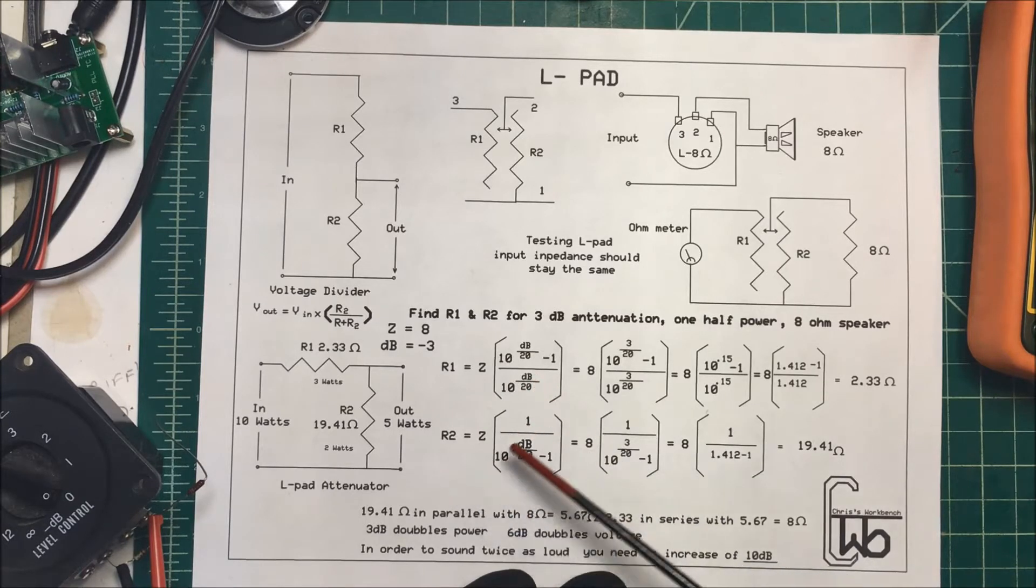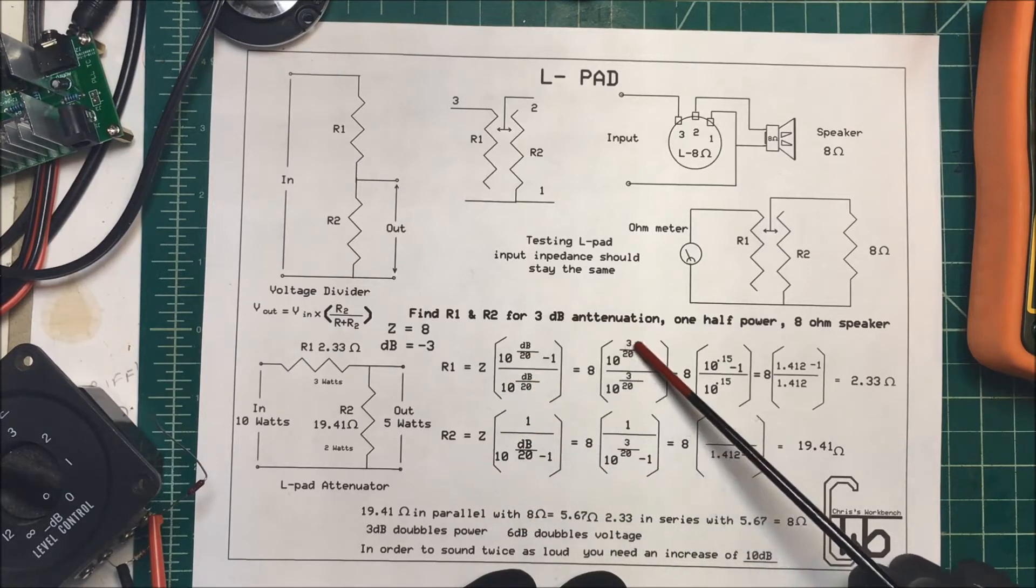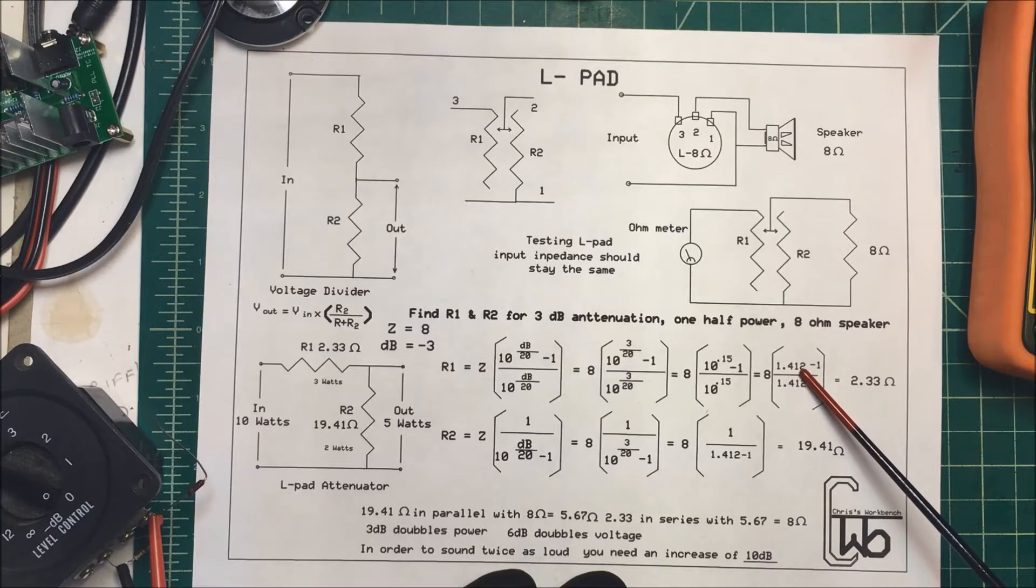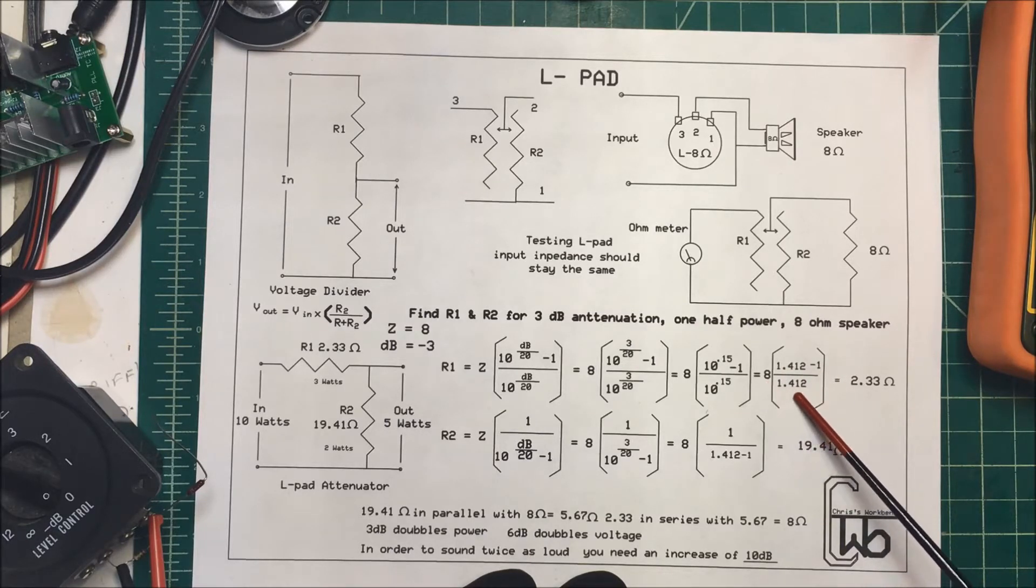If you divide these out it's 0.15, and if you take 10 to the power of 0.15, it's 1.412 minus 1 divided by this and times 8, it comes out to 2.33 ohms. So that's the resistance of R1.